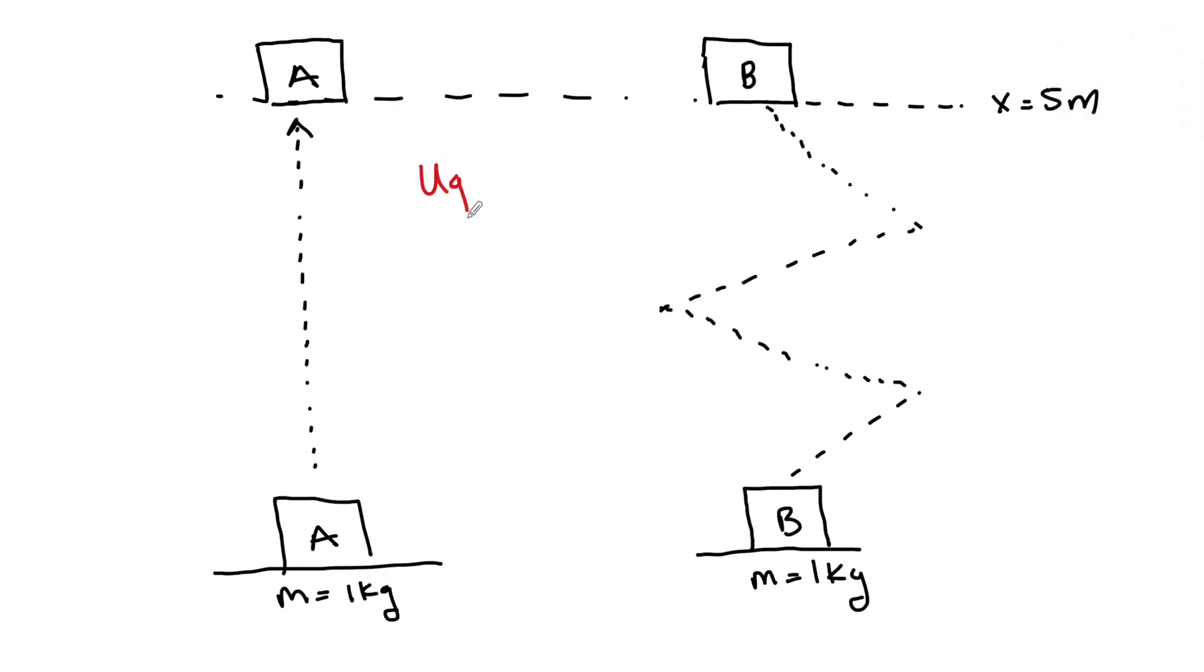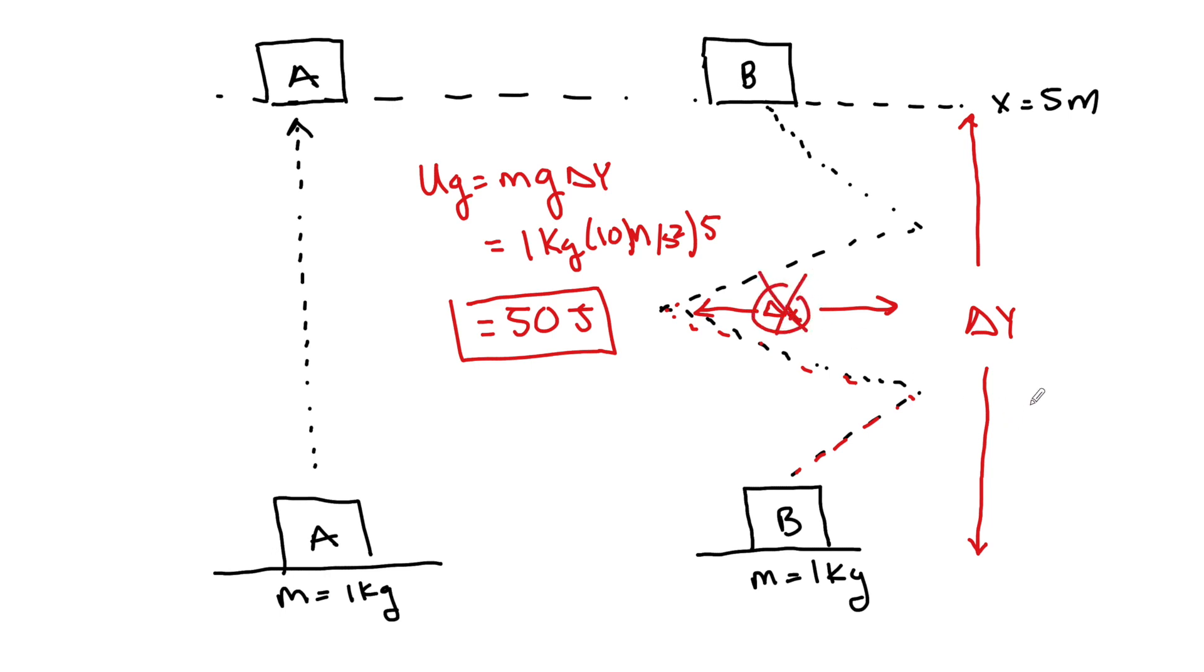the U_G is still going to be equal to M, G, delta Y. So in both cases, they are going to be equal. In both cases, there's going to be 50 joules of energy done. So that's really important. It does not matter the path that you take, whether you go straight up, because the thing that's the factor, guys, is the delta Ys are equal. Gravitational potential energy does not care about the delta X. It does not care about this. That's super important to understand, guys.